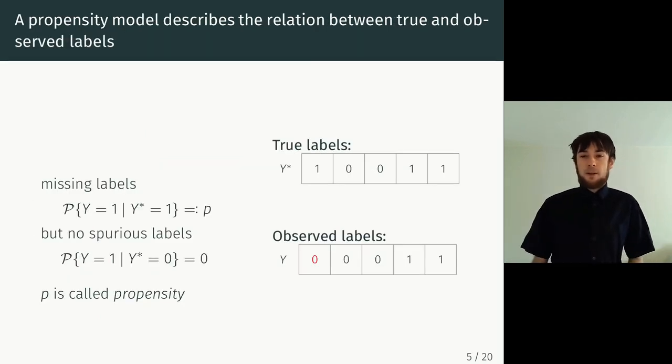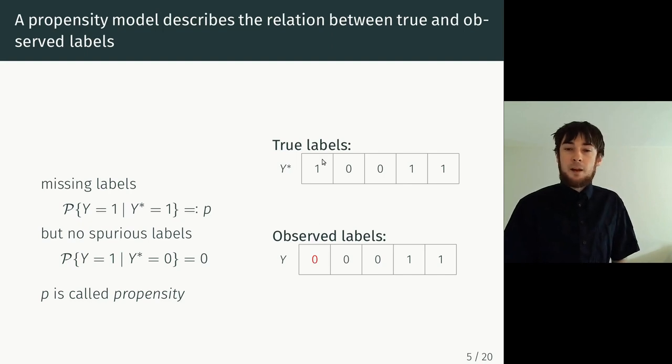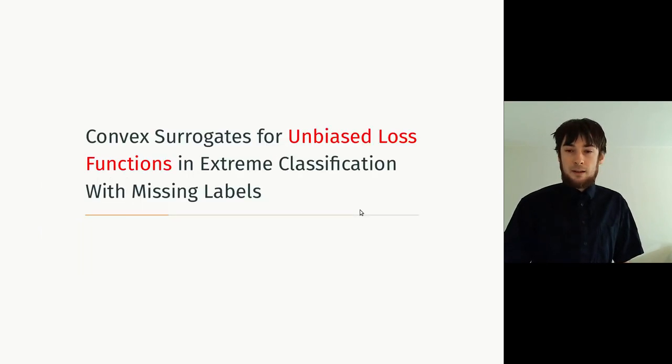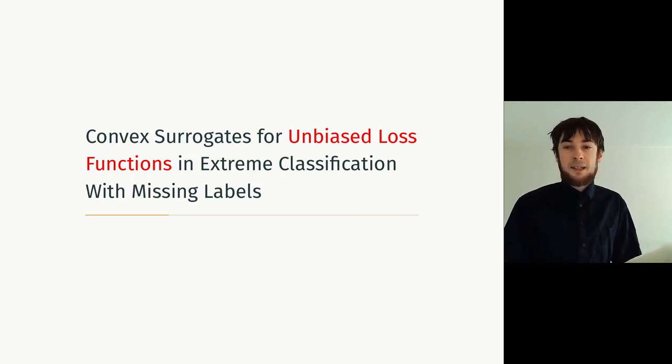More formally, we think about having two variables to describe the labels. Y star, which are the true labels, which is what you get if you actually had the time to go through all of the labels and make a judgment of whether it's relevant or not. But these you don't have available for training. You only have Y, which are the observed labels, which may contain errors. But the errors aren't completely random, but structured in the sense that we assume that if the label is in the true labels, there's a fixed probability P called propensity that we observe it. And if the label isn't in the true labels, it also doesn't appear in the observed labels. So you don't invent any new labels in the data labeling process. With this model, we can then start looking at what we have to do to make learning possible in this setting. And this is why we need unbiased loss functions.